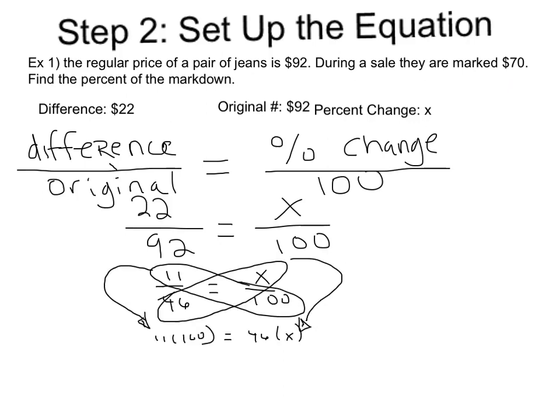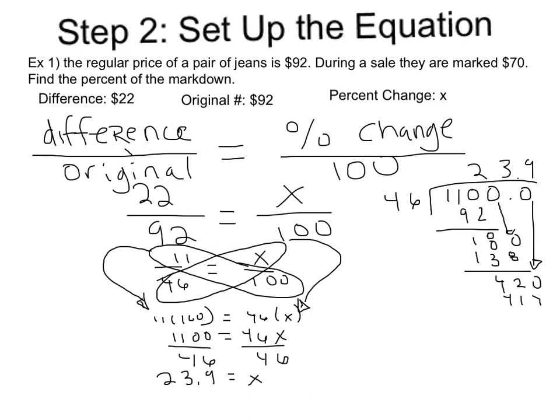Now we can use our cross products to solve. We get 11 times 100 equals 46 times X. We're going to simplify that. 1100 equals 46X. And now we can solve by using our inverse operation, meaning we're going to divide both sides by 46.